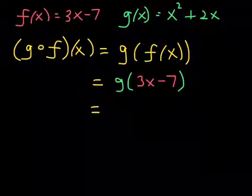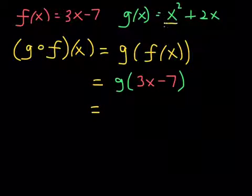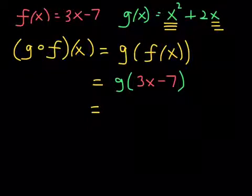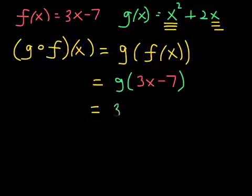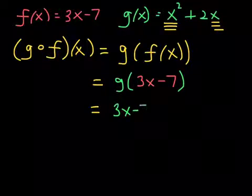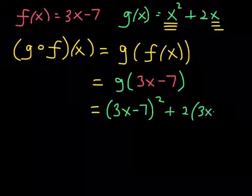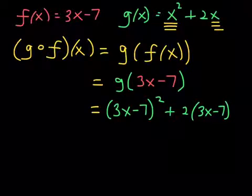Now I just want to draw your attention to something. Function g has two input variables, one right here, I'm underlining it, and right there. So you are replacing both of those input variables with the expression 3x minus 7. So the way that'll look is 3x minus 7 quantity squared plus 2 times 3x minus 7. So you can see we have some simplifying to do.